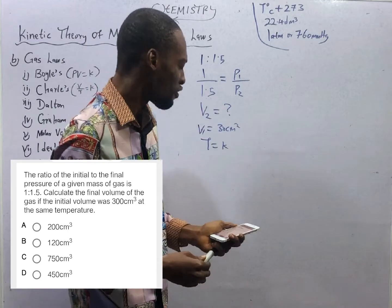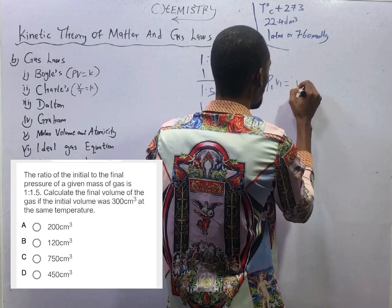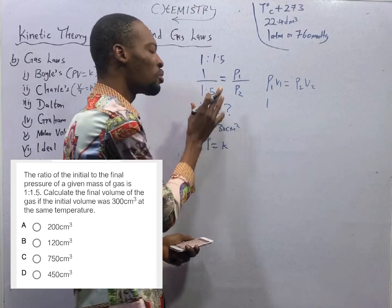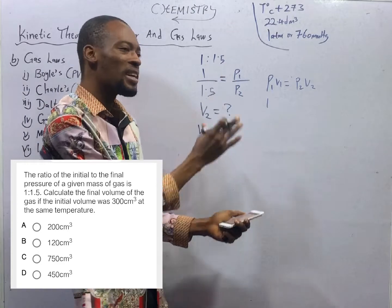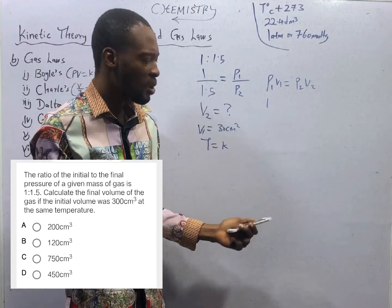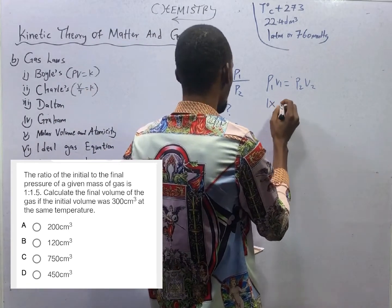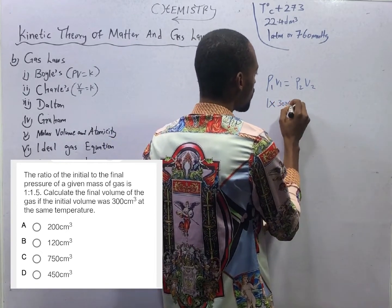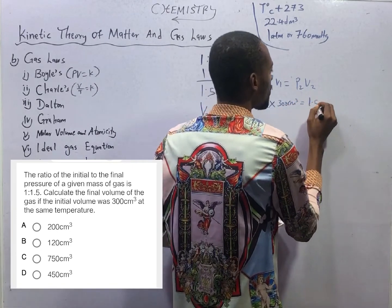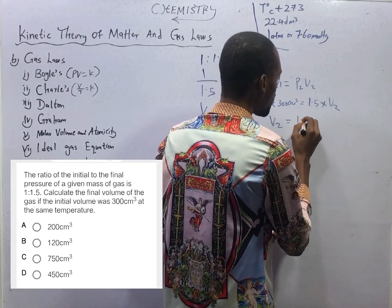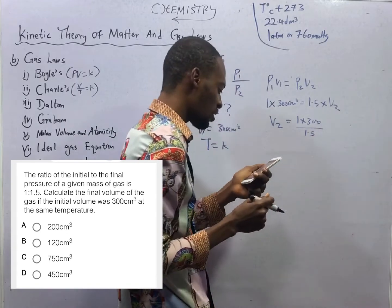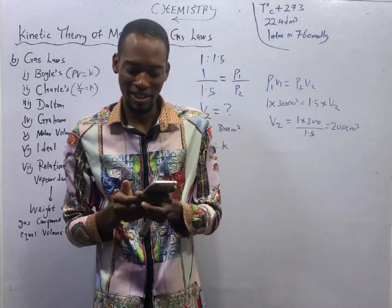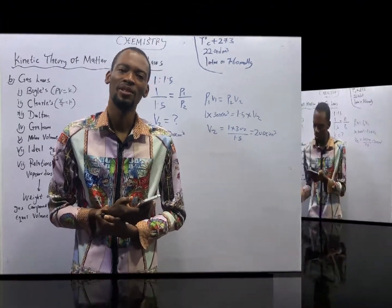From Boyle's Law, P1V1 equals P2V2. Since the pressures are in ratio, we don't worry about units — they cancel. So 1 times 300 cm³ equals 1.5 times V2. Therefore V2 equals 1 times 300 over 1.5, which gives 200 cm³ — option A is correct.